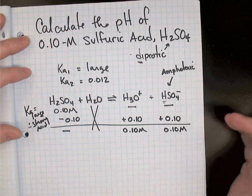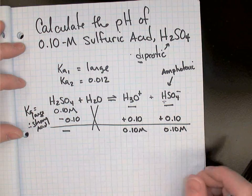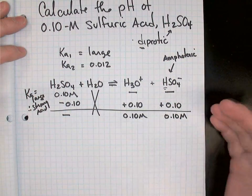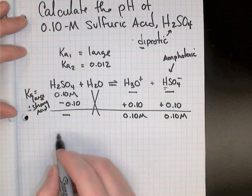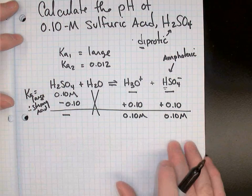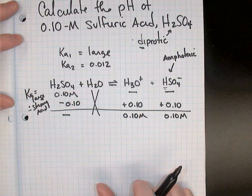If this was the only step, we could very quickly now go find the pH because there's the hydronium. But there's going to be some more hydronium produced in the second step, so we can't yet go find the pH. So let's see if you can pause the video and write out a balanced equation for the second step in this dissociation.